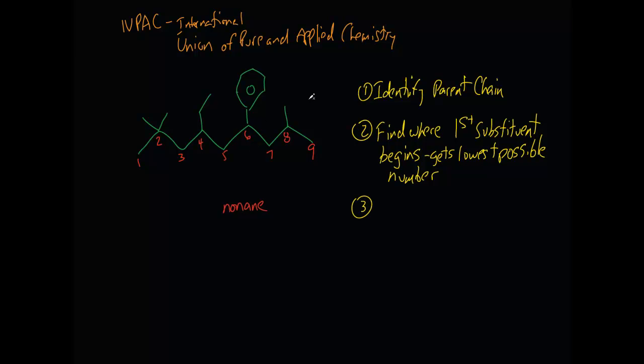So what we can even do is after naming the parent chain, we can kind of circle the substituents maybe to separate them a little bit easier. So we can say that in the case of a tie, the second substituent gets lowest possible number.